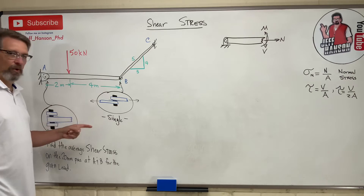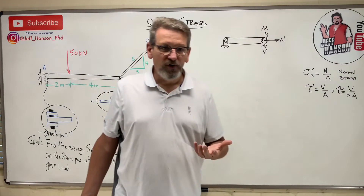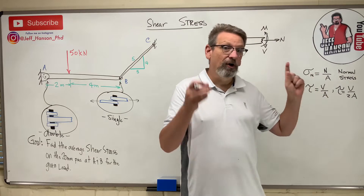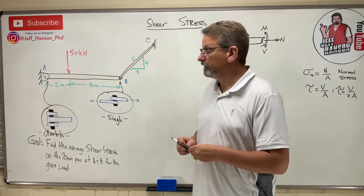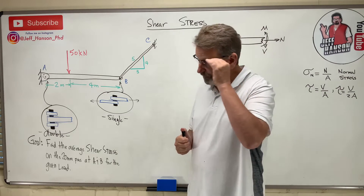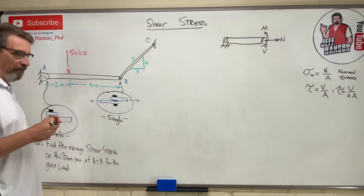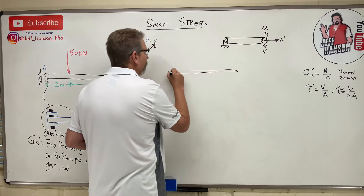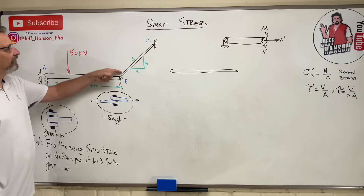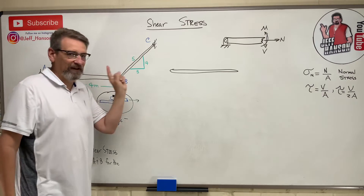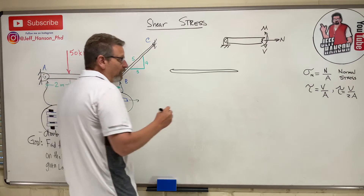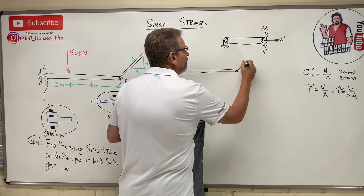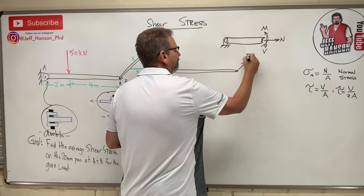All these problems will have a blow-up of the pin so you know whether it's single or double shear. To find V, the shear force on the pin, we have to do some statics. We start with a free body diagram. BC is pin-connected at both ends with no forces in the middle — that's a two-force member. As I pull down, I'm stretching that member, so it's in tension — that's FBC.